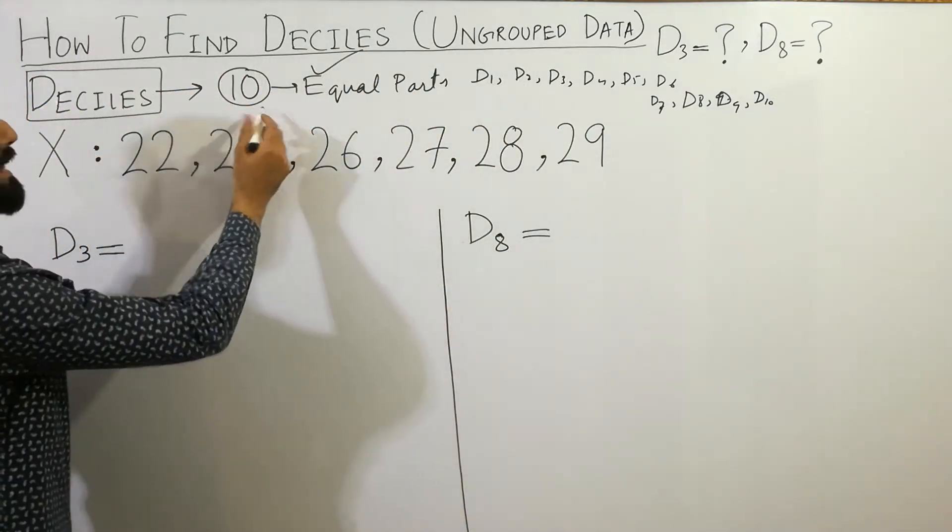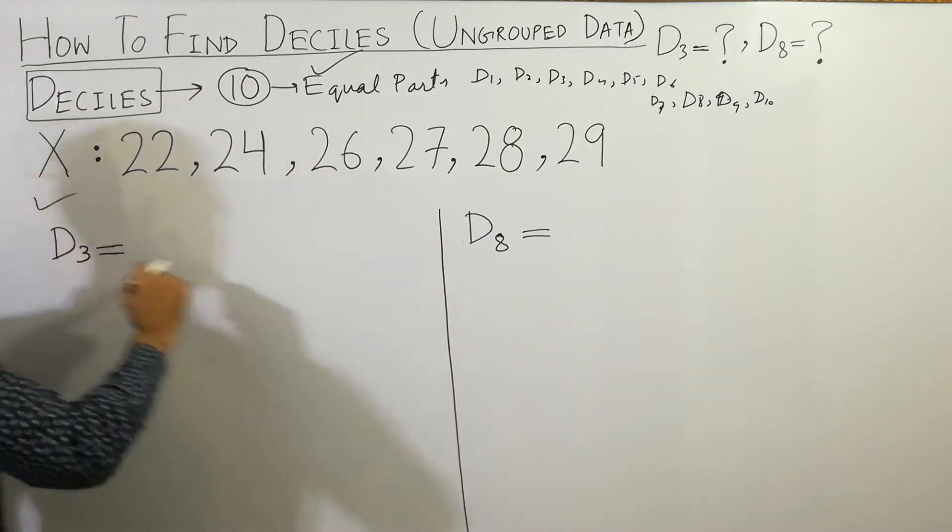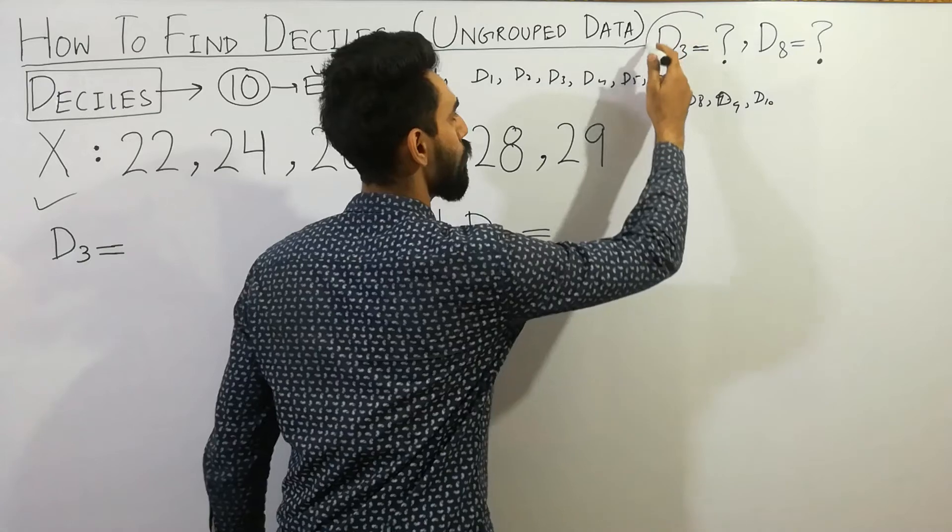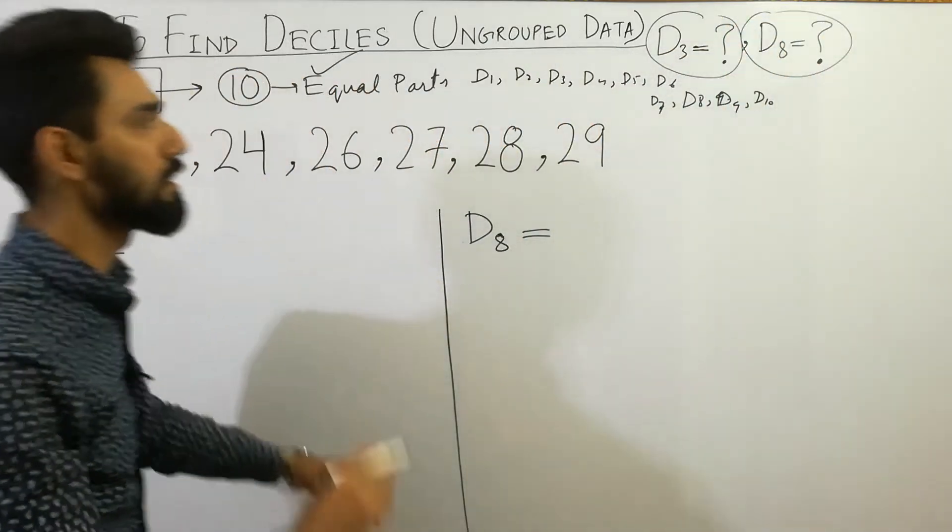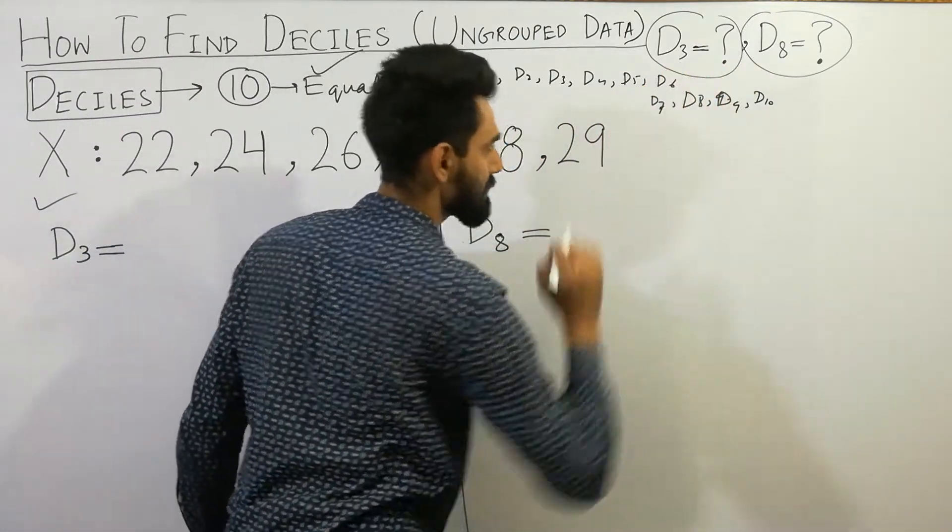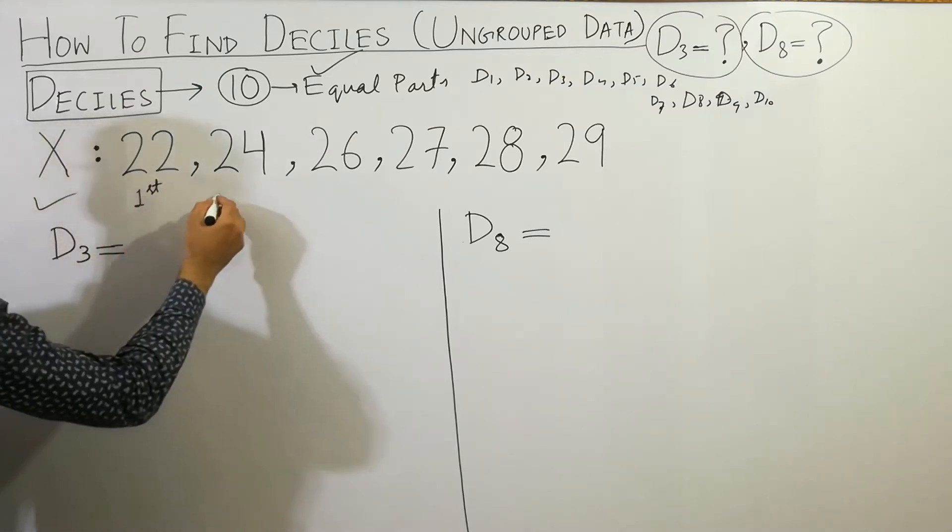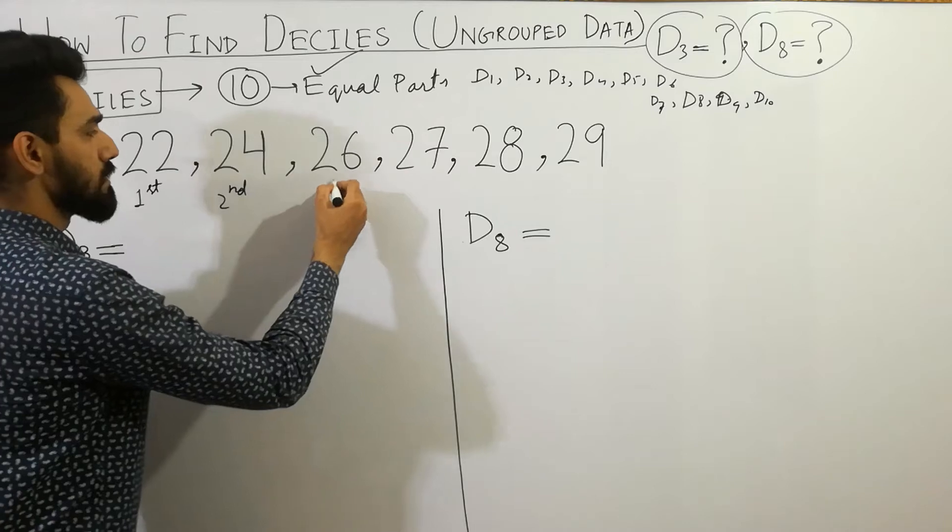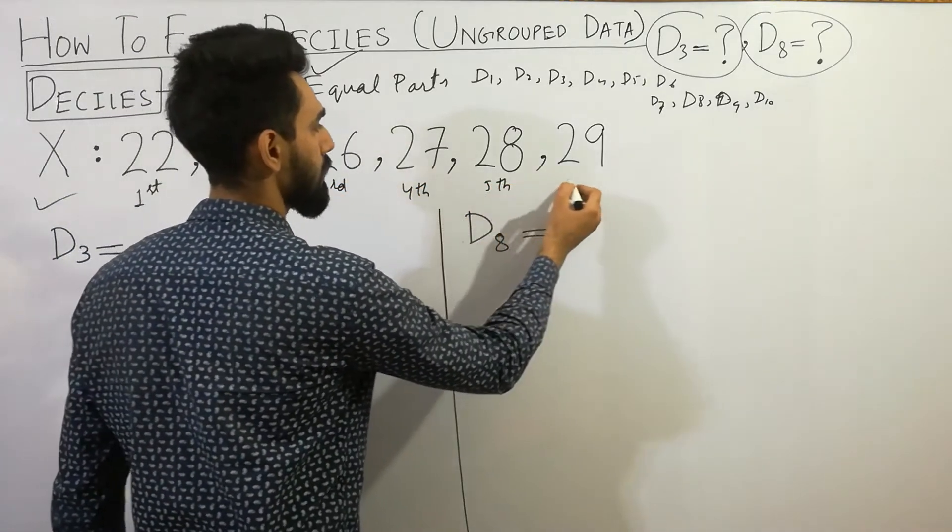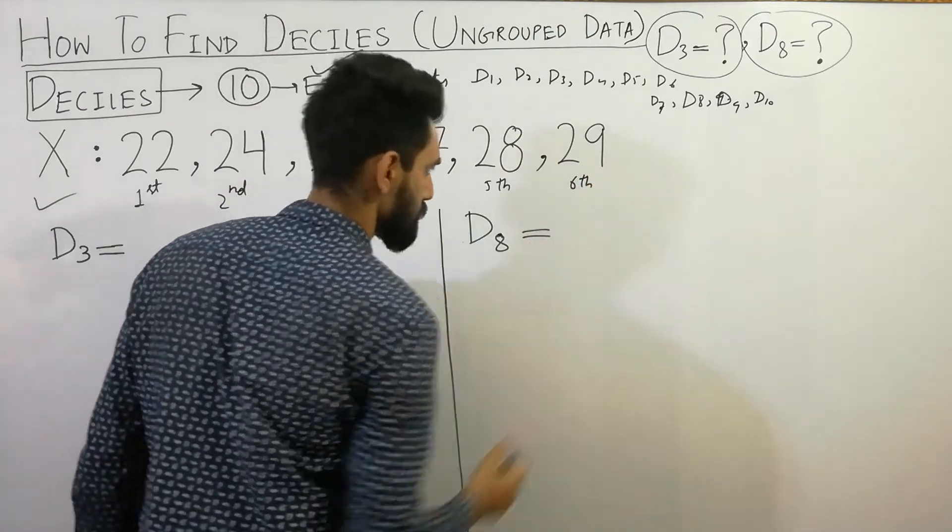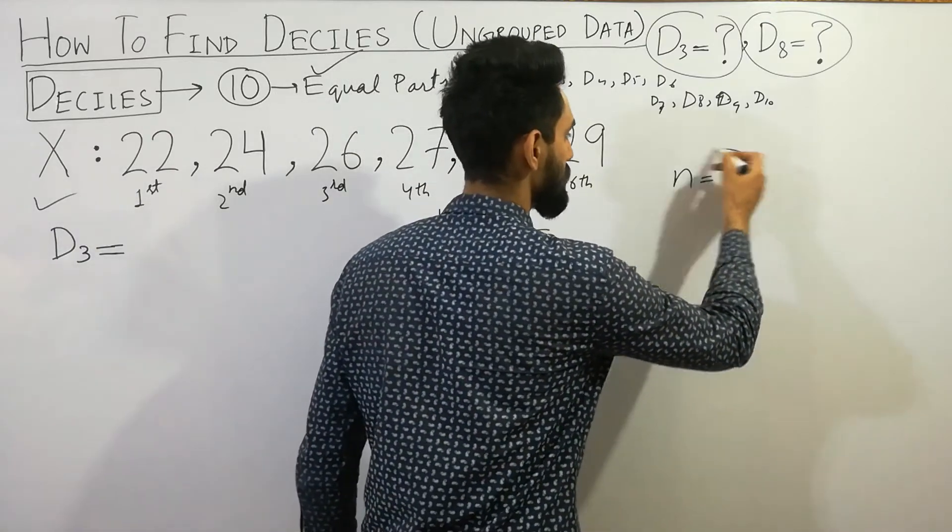But in this question, the given data, you have to find what is d3 and what is d8. Now I'm going to calculate the third decile and eighth decile. So here, this is first term, second term, third term, fourth term, fifth term, and last is the sixth term. So here n is equal to the number of values, which is six, which is an even number.